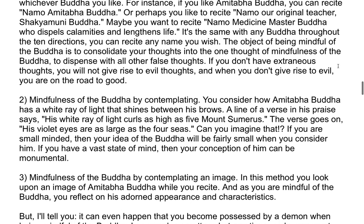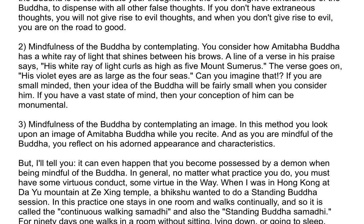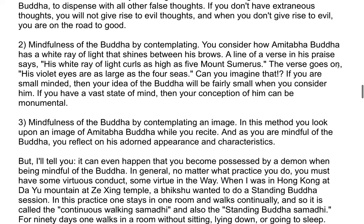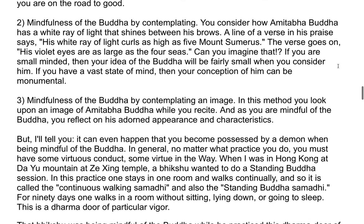The second method is mindfulness of the Buddha by contemplating. You consider how Amitabha Buddha has a wide ray of light that shines between his brows. A verse says: 'His wide ray of light curls as high as five Mount Sumeru. His violet eyes are as large as the four seas.' If you are small-minded, your idea of the Buddha will be small. If you have a vast state of mind, your conception of him can be monumental.